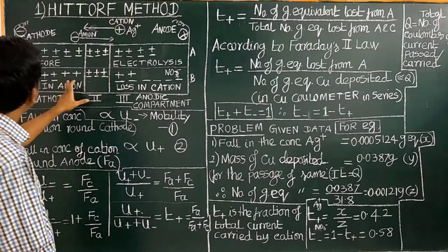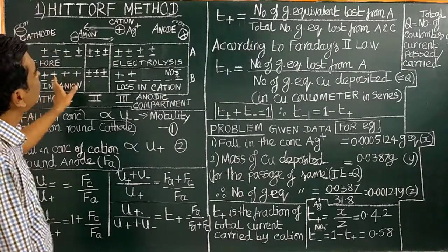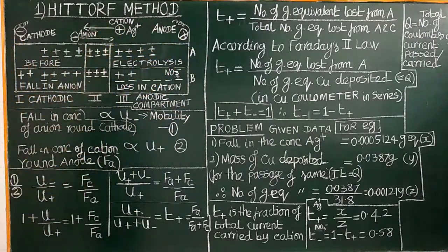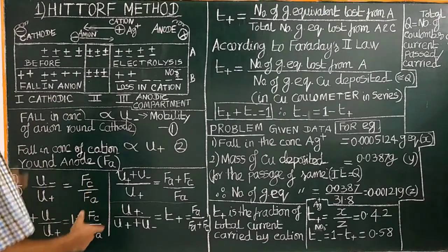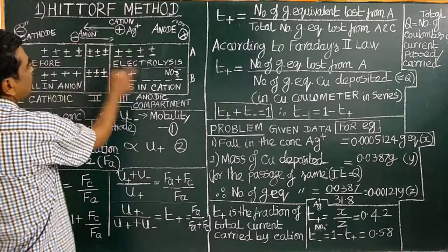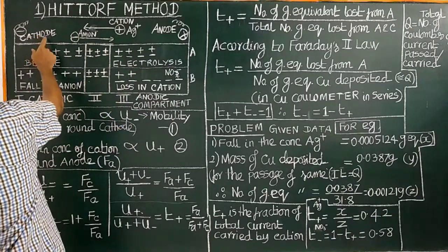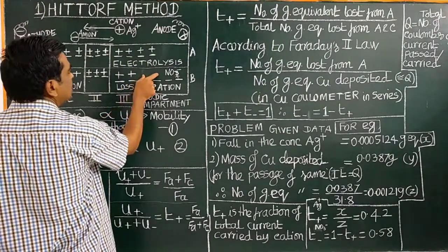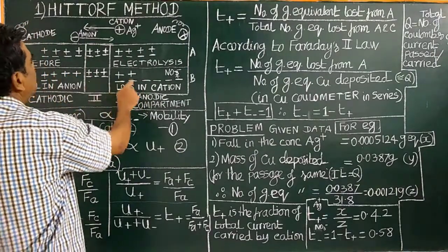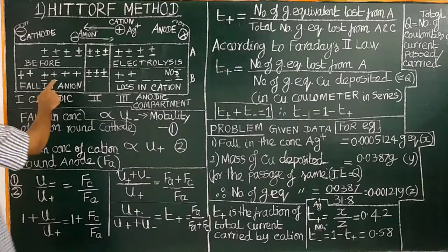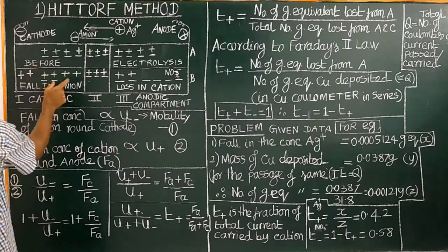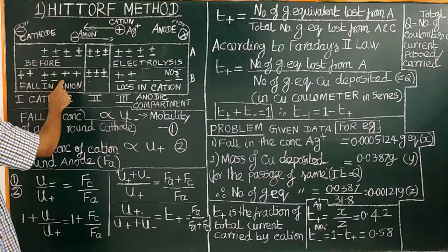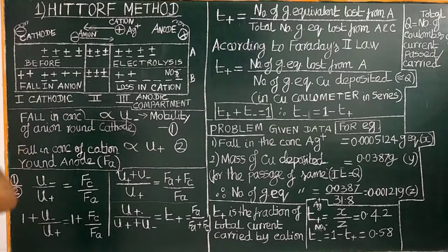During electrolysis, the anions migrate from the cathodic compartment towards the anode due to electrostatic attraction between the negatively charged ions and the anode. After electrolysis, because of the migration of silver ions from anode to cathode, there is a loss in cation concentration in the anodic compartment. Similarly, there is a fall in anion concentration around the cathode compartment.